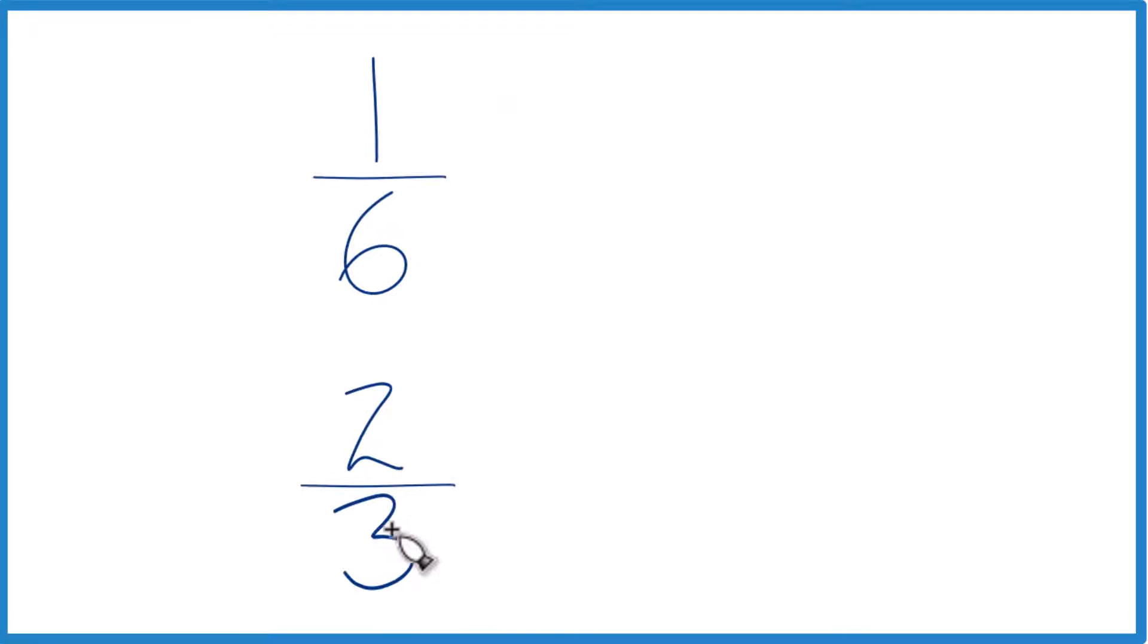Why don't we do this? How about 3 times 2? Because that would equal 6 here. And up here we already have 6. So let's just call it 1/6 up here. But we can't just multiply the denominator by 2. We do need to multiply the numerator by 2 as well.